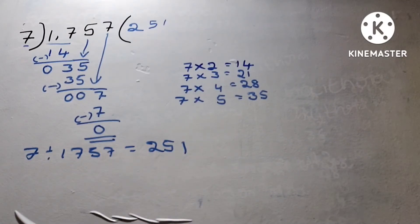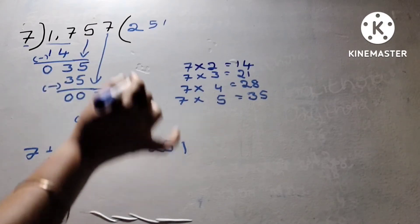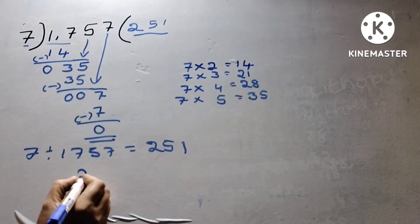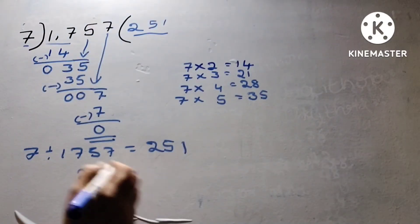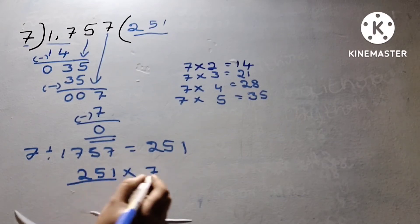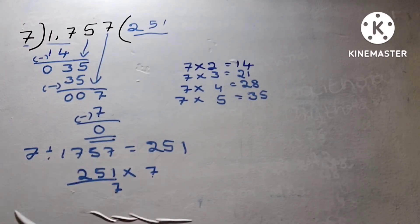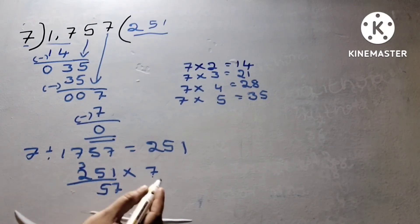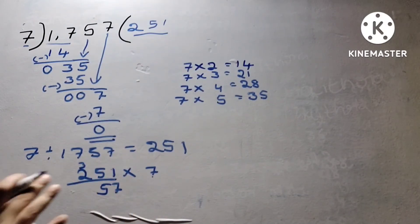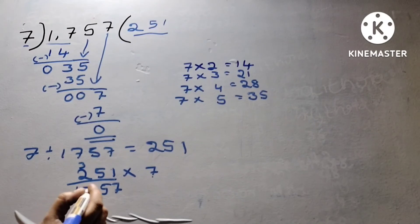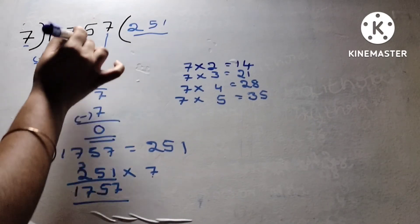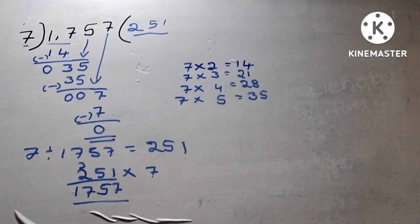So again we have 251. 1 into 7 multiplication: 7. 1 is 7. 5 is 35, carry 3. 2 is 14, 14 plus 3 is 17. So the answer is 1,757 — 100% correct! Please like, share and subscribe.